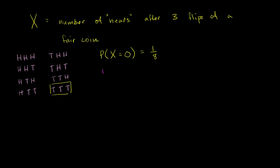What's the probability that our random variable capital X is equal to one? Which of these outcomes gets us exactly one head? We have heads-tails-tails, tails-heads-tails, and tails-tails-heads — three out of the eight equally likely outcomes get us to one head, which is the same as saying our random variable equals one. So this has a 3/8 probability.